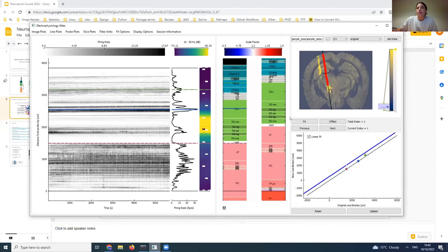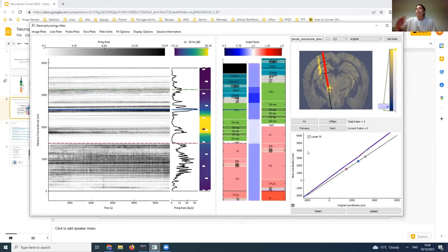And then apply a fit. After you've applied more than three lines, you'll notice that the electrodes are not only shifted but they're also scaled along the probe, according to the fit of the lines that you've placed, which you can see in this bottom plot here. And you can also see the fit that's been applied to the different regions in the central panel.